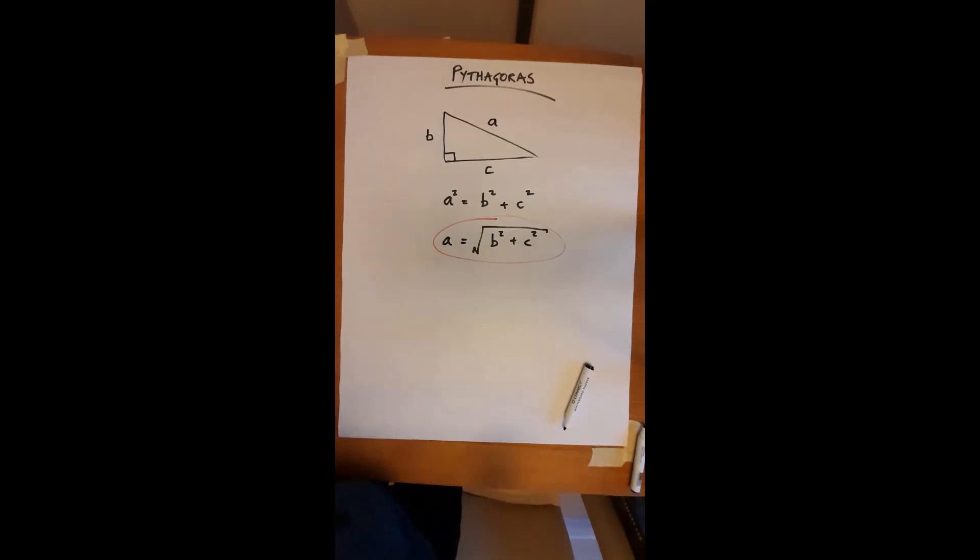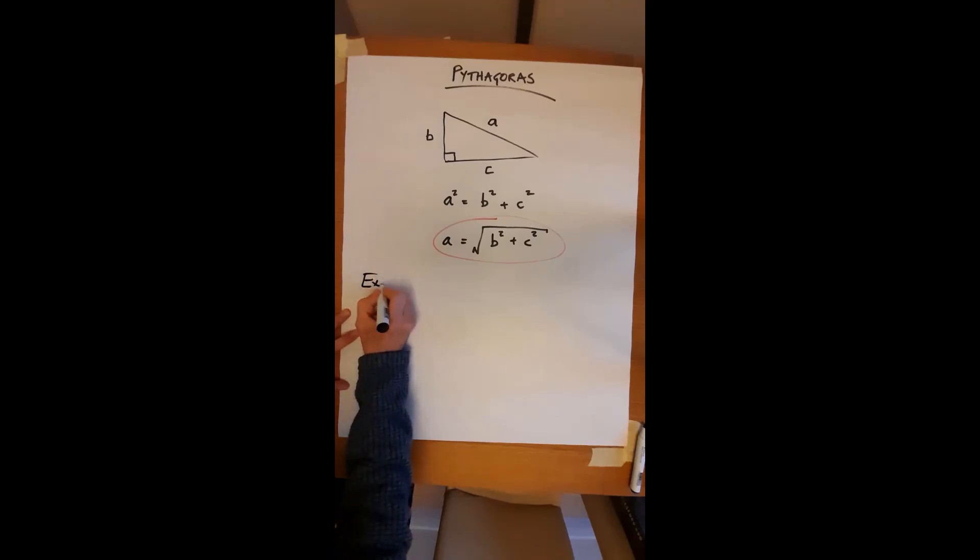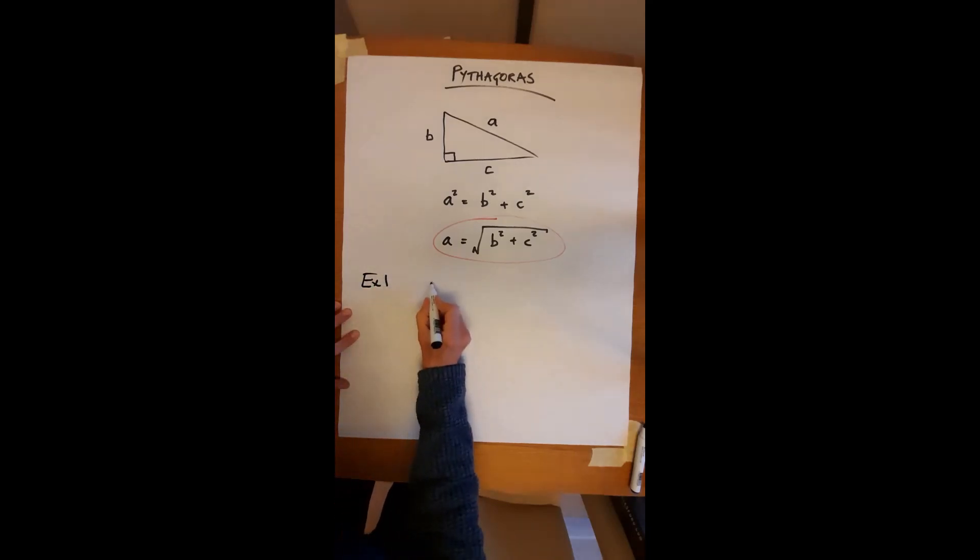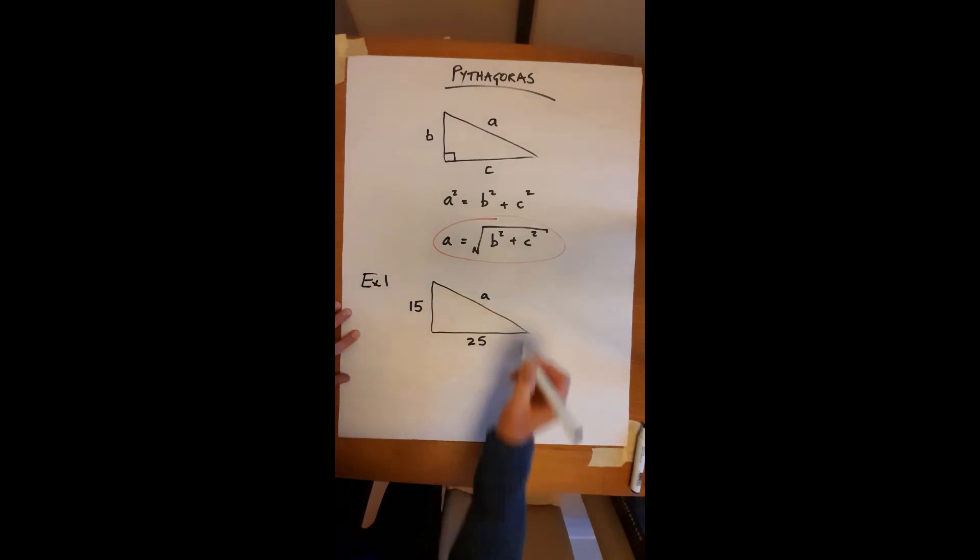Next step, let's do a couple of examples. Again, I'll follow the examples which are on your handout. So example one. I've given you a simple triangle and I've not drawn it to scale, but you have some simple numbers to work with. I said this side is 15 meters, this side is 25 meters. Find this side A.